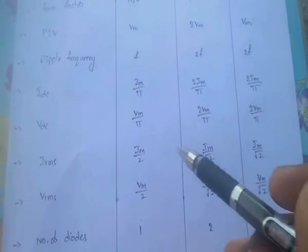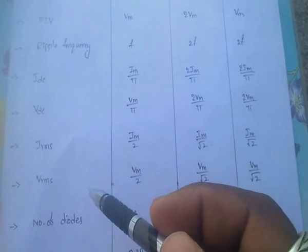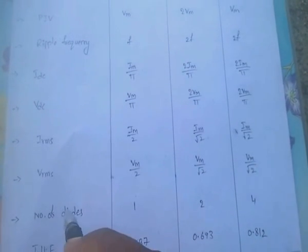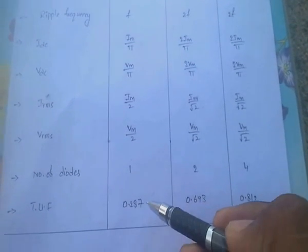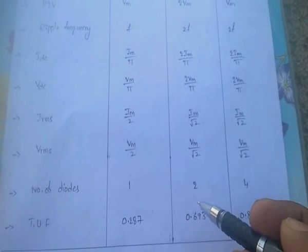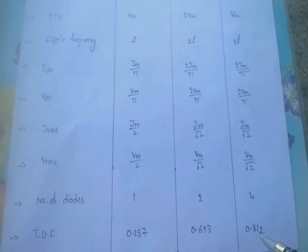IDC equals I_M by pi for half wave, 2I_M by pi for both center tap and bridge. VDC is V_M by pi for half wave, 2V_M by pi for both center tap and bridge. IRMS is I_M by 2 for half wave, I_M by root 2 for center tap and bridge. VRMS is V_M by 2 for half wave, V_M by root 2 for center tap and bridge. Number of diodes: 1 for half wave, 2 for center tap, 4 for bridge. TUF: 0.287 for half wave, 0.693 for center tap, 0.812 for bridge.